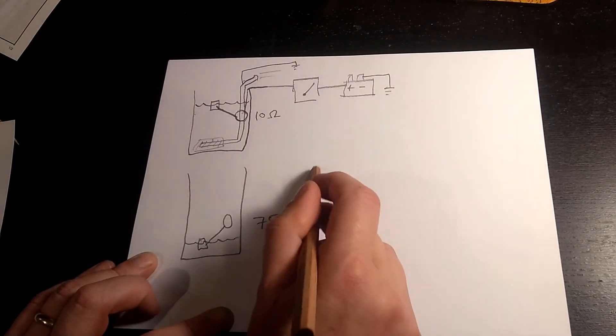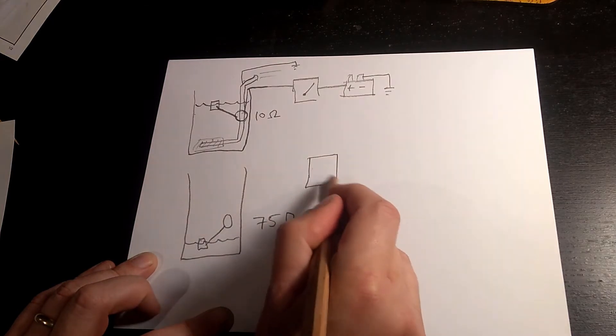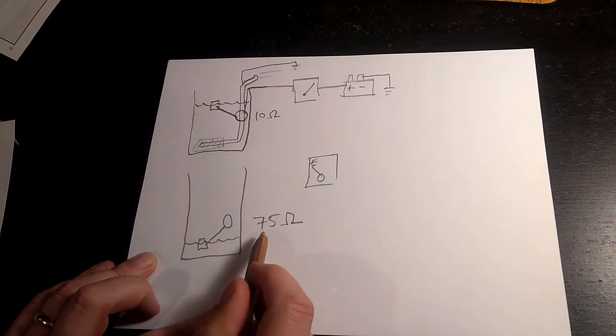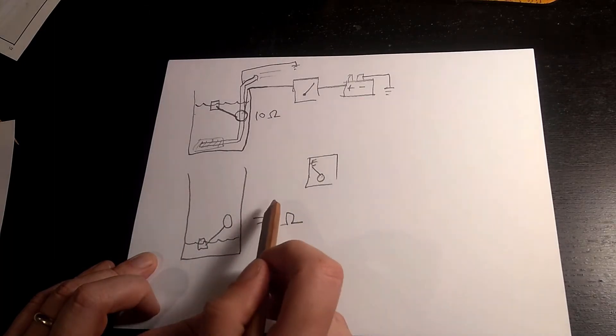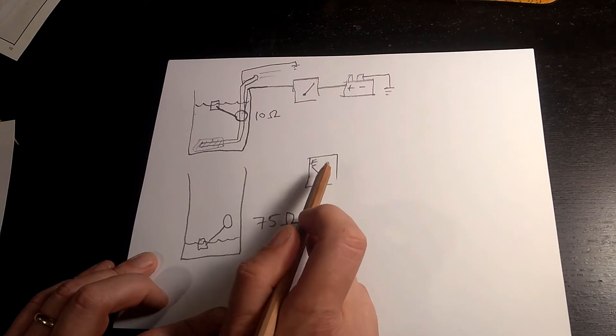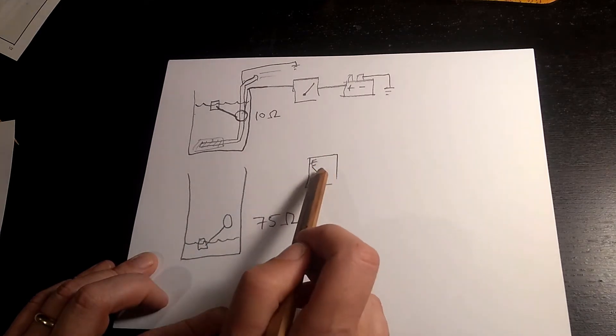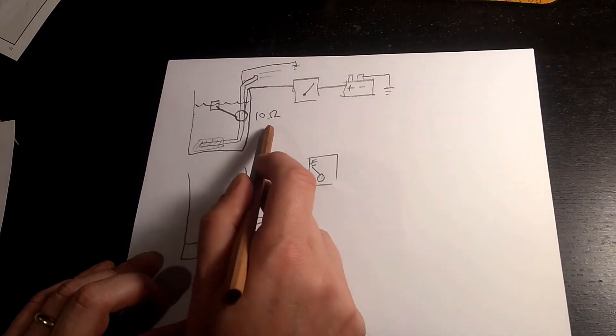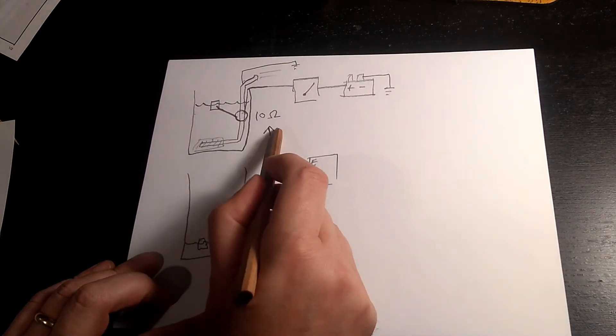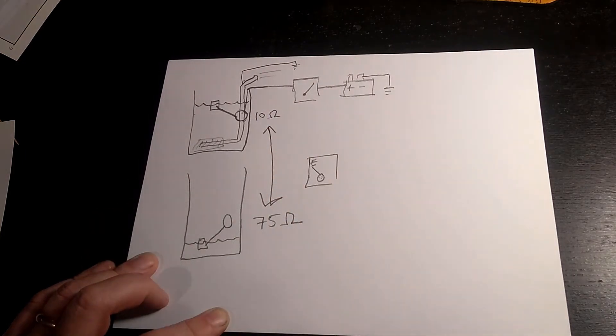So, your gas gauge over here is going to show empty. Really all that's happening is this gauge is effectively an ohmmeter that is reading a range from the high to the low, and it's usually just a linear relationship.